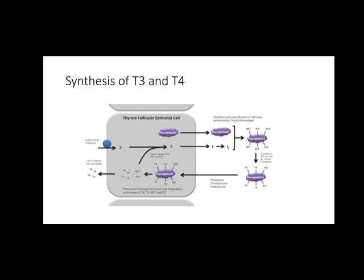In step four, there is attachment of iodine with tyrosine, catalyzed by the enzyme peroxidase, forming monoiodotyrosine and diiodotyrosine. In step five, there is linking of iodinated tyrosines together to form T3 and T4.